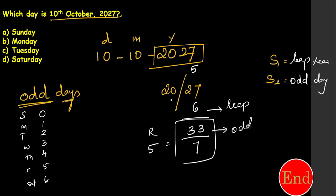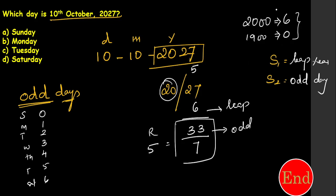Now for the century part: 20 refers to the 20th century. Each century has a specific code — for the 2000s (20th century in this system), the number is 6. For the 1900s it is 0. So 6 plus 5 gives 11 — that is the odd days total for the year 2027.